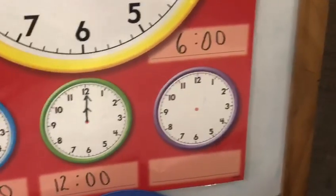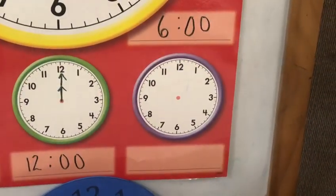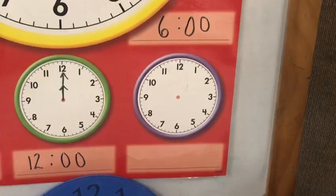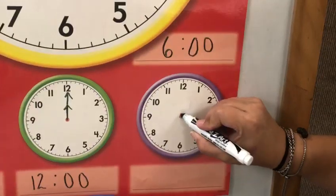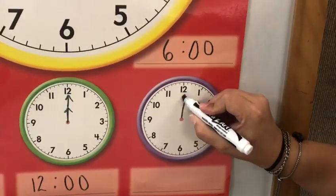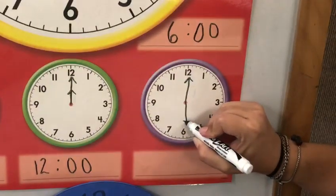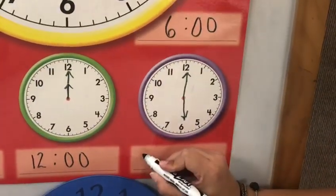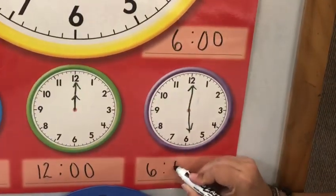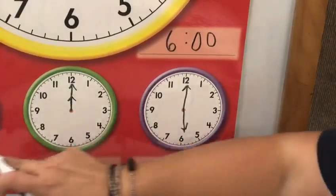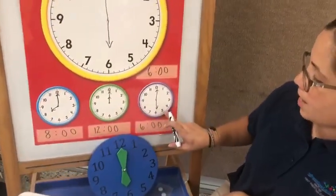And the purple clock is gonna be time for dinner. At what time we have dinner? We can have dinner around 6 o'clock. Big arrow on 12, little arrow on 6. And it's 6 o'clock. These are the times that we can have breakfast, lunch, and dinner.